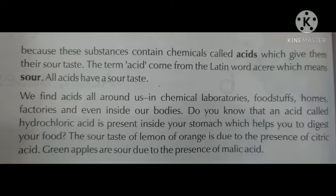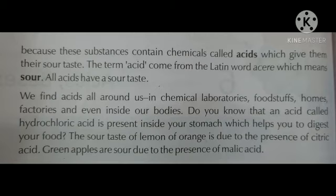Acids are naturally occurring in fruits and vegetables and are also prepared from minerals, so they are also known as mineral acids. Acids are of two types: organic acids, which occur naturally in food items like lemon, curd, apple, and grapes; and mineral acids, which are present in factories and used in chemical reactions for different products.